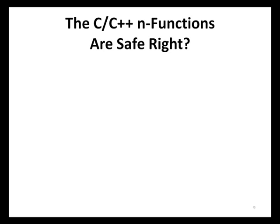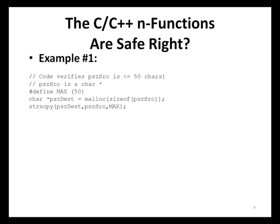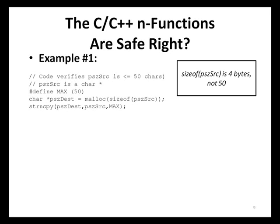The C and C++ 'n' functions are often used by developers to control the length of data being written from one buffer to another. A common misconception is that using these functions renders an application immune from buffer overflows — this is incorrect. For example, using a constant that is not the same as the actual size of the data type: if malloc creates a buffer of size 4 but strncpy copies at most 50 bytes into this 4-byte buffer, a potential buffer overflow condition results.